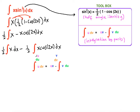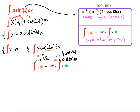We're going to apply the integration by parts formula. We define u and dv: u is x and dv is cos(2x) dx. So du is 1·dx, and v — the anti-derivative of cos(2x) — is ½·sin(2x). We differentiate u and integrate dv.